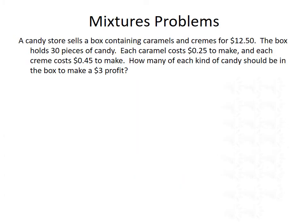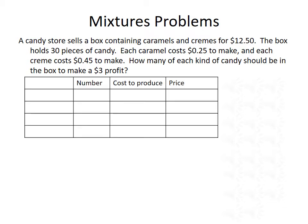Next, we want to do a problem that deals with mixtures. A candy store sells a box containing caramels and creams for $12.50. The box holds 30 pieces of candy. Each caramel costs $0.25 to make, and each cream costs $0.45 to make. How many of each kind of candy should be put in the box to make a $3 profit? After we've read our problem, we want to set up a table to keep track of the information. We're going to look at the number of candies, the cost to produce each candy, and the overall price from the production.